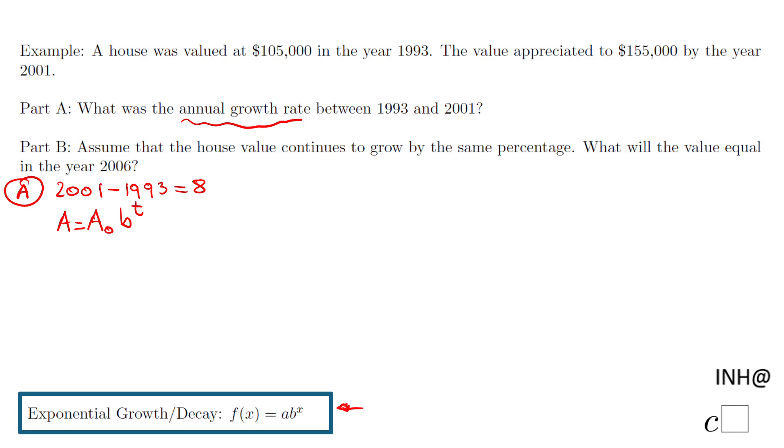What do we know? The value in 2001 was $155,000. The original initial value is $105,000. We need to find b, and we know t is 8 years.